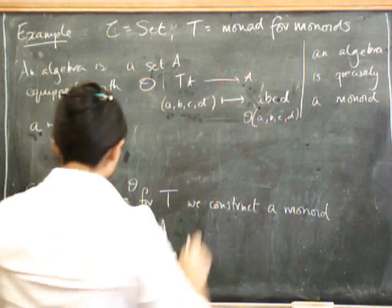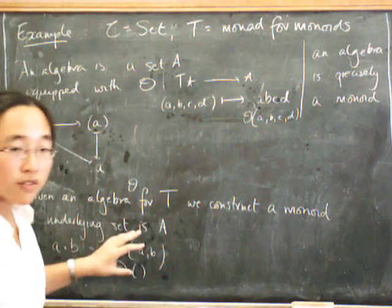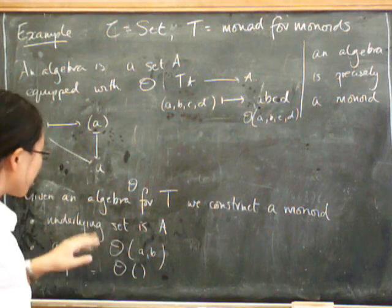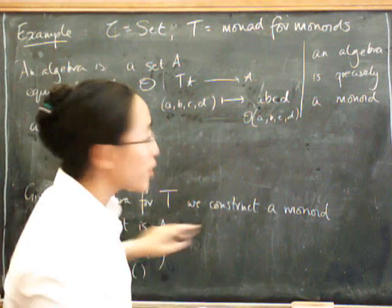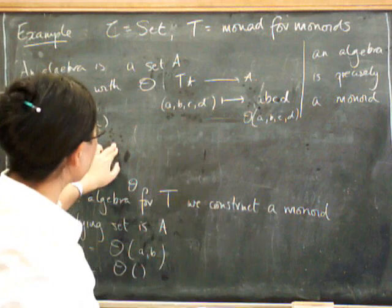So now, we've got to show that this is associative and unital. Now, both the associativity and the unitality come out of this square that was over here and have nothing to do with this triangle.